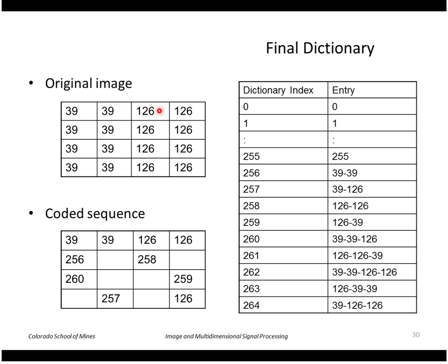Next we encounter the value 126, and it will create a code word to represent 39 126 as shown here. Note that it doesn't use that code word right away, it uses it the next time it sees it. For example, when I get to the next row and see a 39 39 again, I can replace that with a 256.